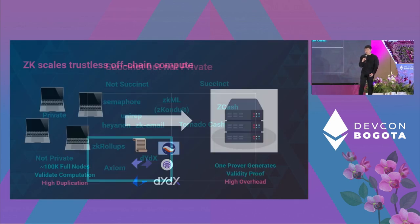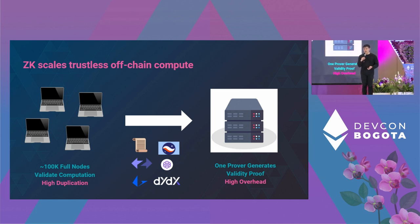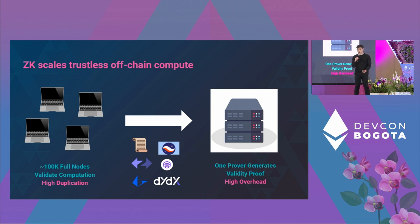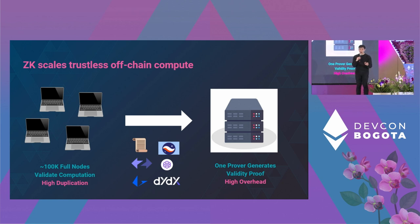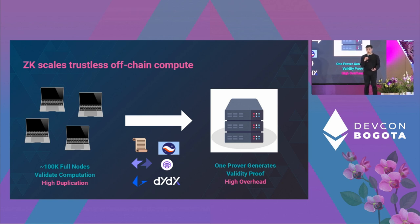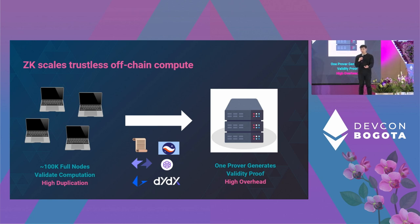In the bottom left corner, if we ask for succinctness but not privacy, the general theme is that ZKPs are used to scale trustless off-chain compute. If you run code on Ethereum today, every Ethereum full node has to rerun that code to validate the execution of your transaction — about 100,000 times overhead with very high duplication. Succinct proofs mean only one party needs to execute the transaction and generate a validity proof. Everyone else simply validates that proof, removing the duplication but incurring high overhead on the prover. Examples today include all of the ZK rollups, as well as app-specific rollups like dYdX or Loopring.